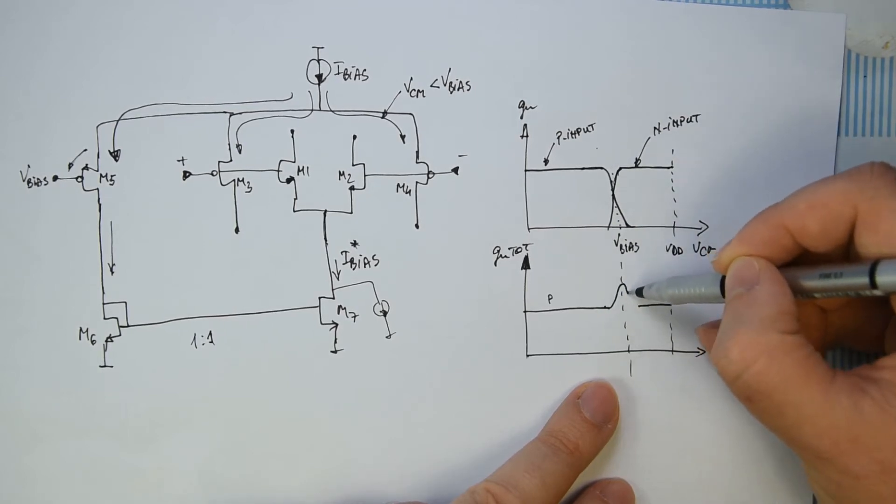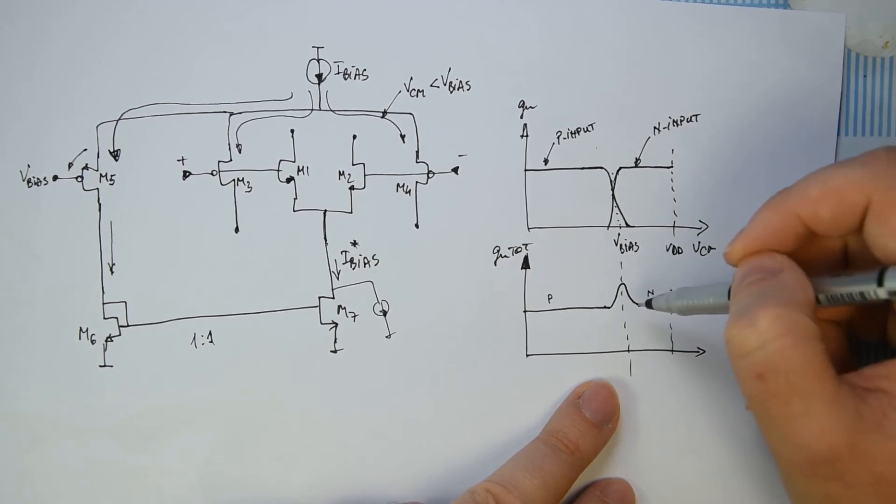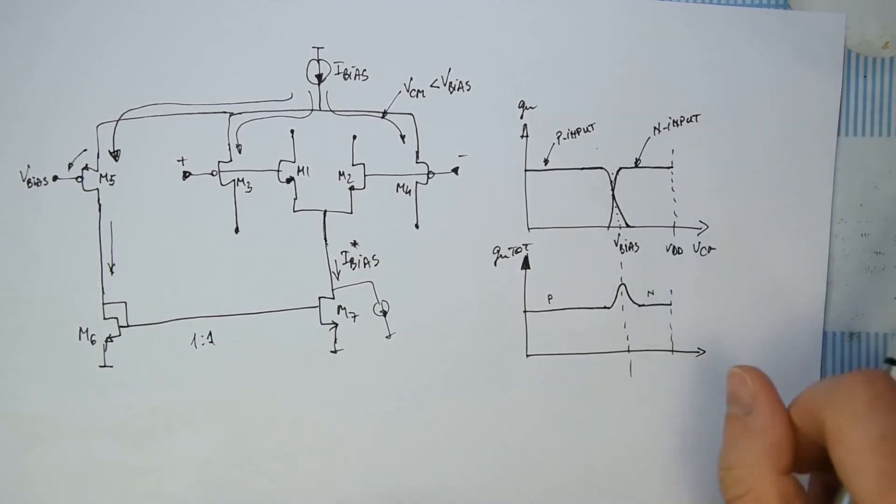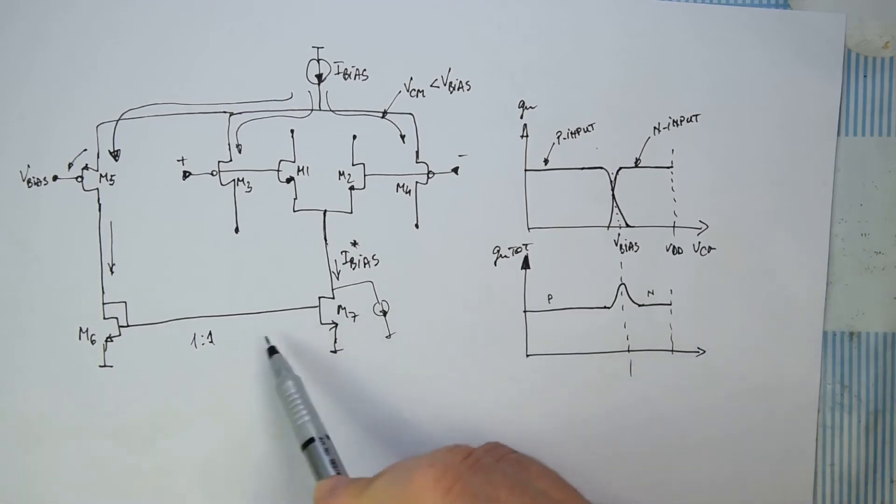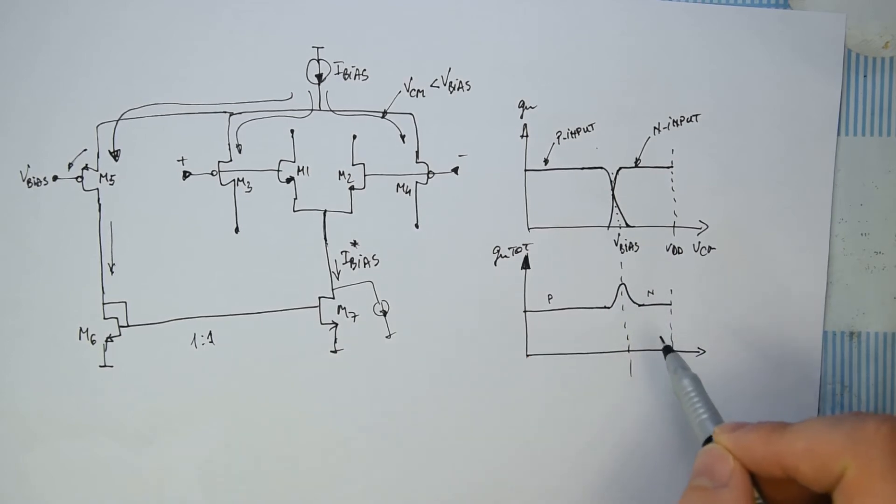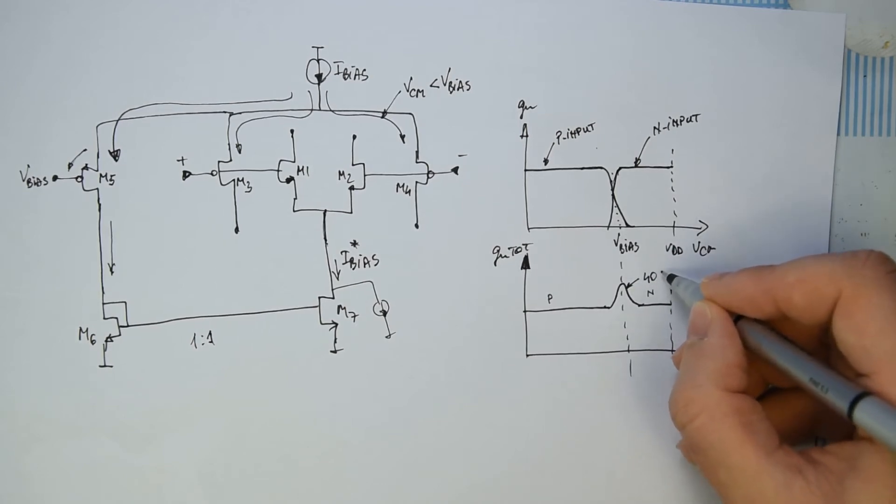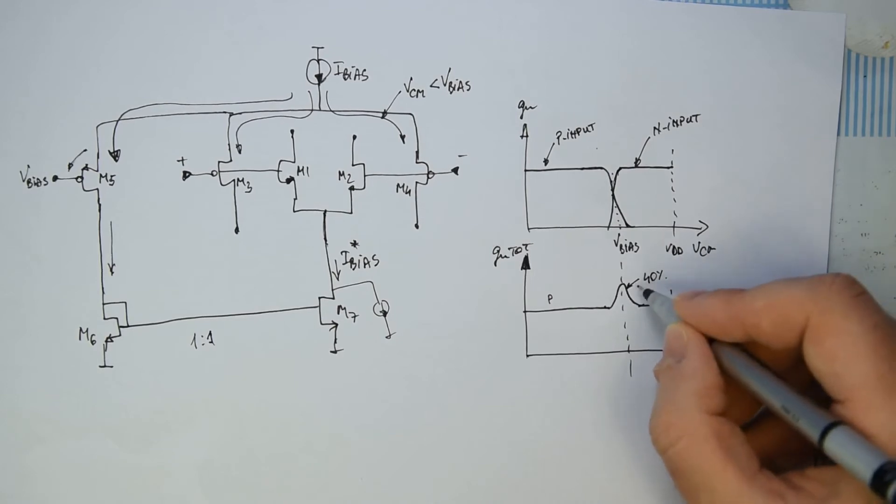So, it will be kind of overshoot, something like this. And depends on the sizes that you choose, depends on the current ratio and so on. This bump will be bigger or smaller, but still will be there always. Usually, in practice, you can have something like 40%, 30%, 50% increase in this region.